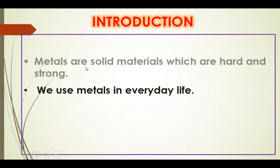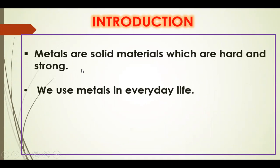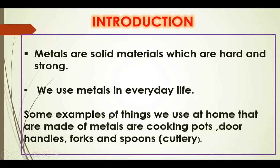Introduction. Metals are solid materials which are hard and strong. We use metals in everyday life. Some examples of things we use at home that are made of metals are cooking pots, door handles, forks and spoons.